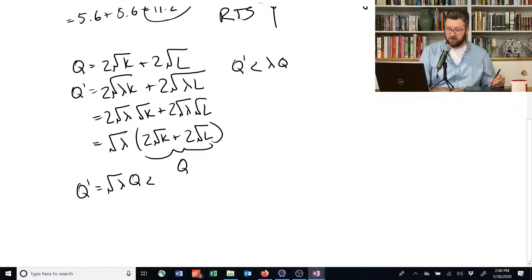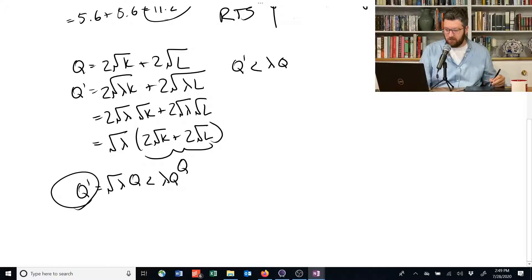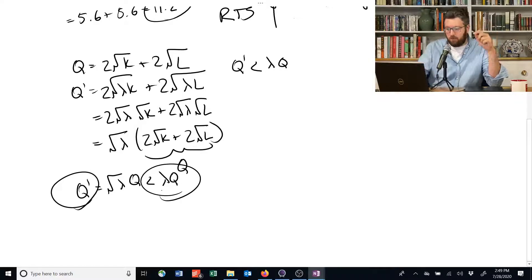And that's going to be less than lambda times Q for any lambda that's greater than 1. So if I increase the proportion by any amount, the Q prime here, the amount of extra output I get, is going to be less than the same proportion increase in the output.